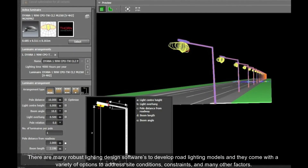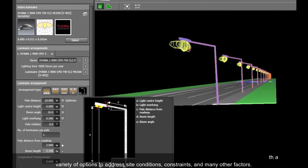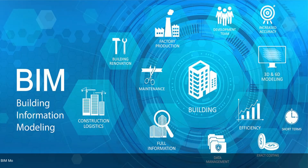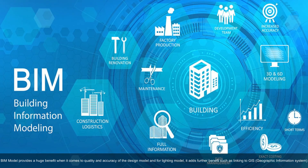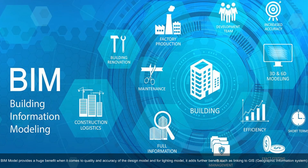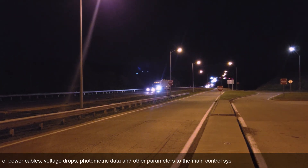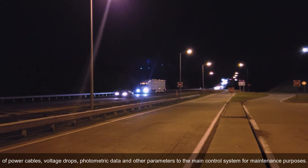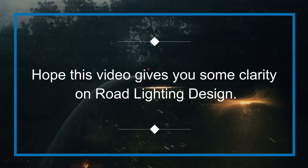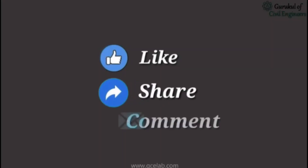There are many robust lighting design softwares to develop road lighting models, coming with a variety of options to address site conditions and constraints. BIM models provide a huge benefit for the quality and accuracy of the design model. For lighting models, BIM adds further benefits such as linking to GIS — geographic information system — power cables, voltage drops, photometric data, and other parameters to the main control system for maintenance purposes.